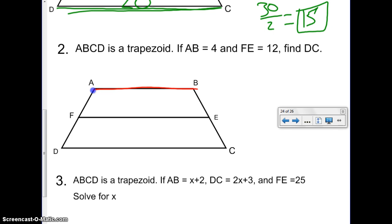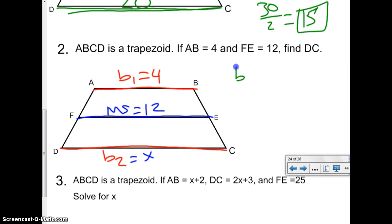So, this is our Base 1. I'm going to label that B1. This is DC. We'll label that B2. And then FE, that's our Mid-Segment, right? I'll go ahead and write MS here. Let's see what they gave us. They told us AB is 4. Awesome. And they told us, this time they told us the Mid-Segment is 12. And they want us to find DC. So, I'm going to call that X. Well, let's write our formula like we have then.